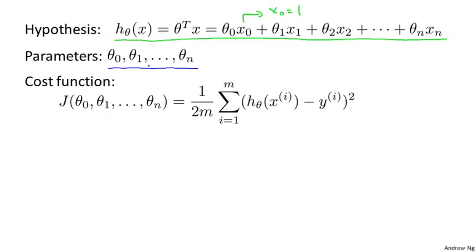But instead of thinking of this as n separate parameters, which is valid, I'm going to think of the parameters as theta, where theta here is an n+1 dimensional vector. So I'm going to think of the parameters of this model as itself being a vector.